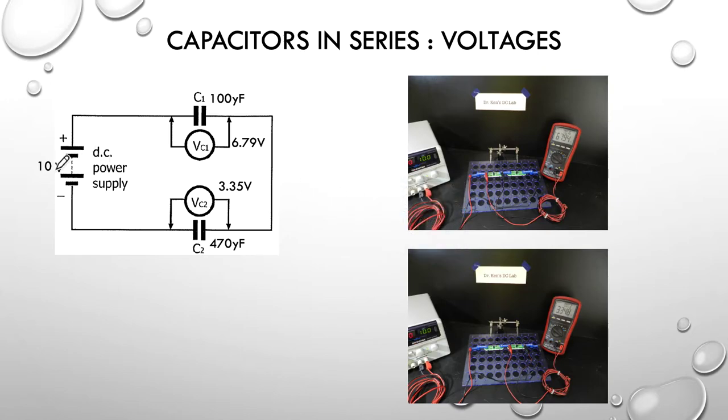The larger voltage should be seen across the smaller capacitor and we're getting 6.74 and across the 470 we're getting 3.35. So, that's where those values are coming from. Simply read off the meters.